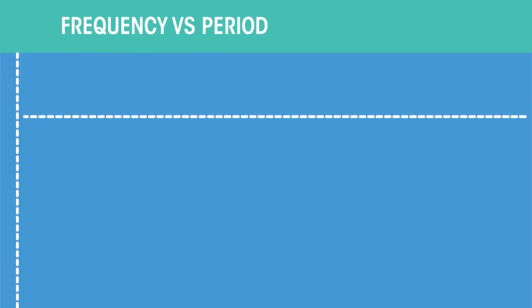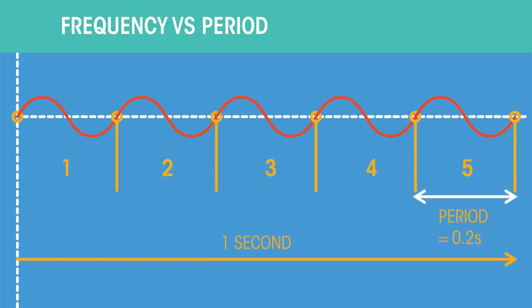The frequency and period are often confused. The frequency refers to how often something happens, whereas the period refers to the time it takes to happen.